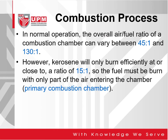In normal operation, the overall air-fuel ratio of a combustion chamber can vary between 45 to 1 and up to 130 to 1 — that is, 130 parts of air to one part of fuel. However, kerosene will only burn efficiently at or close to a ratio of 15 to 1, so the fuel must be burned with only part of the air entering the chamber.